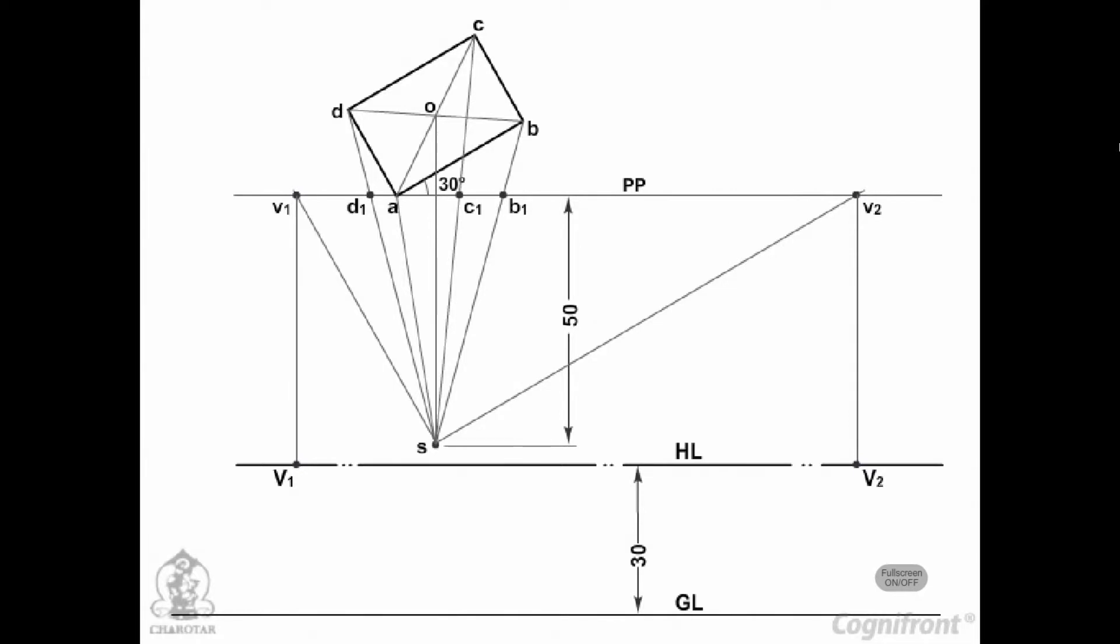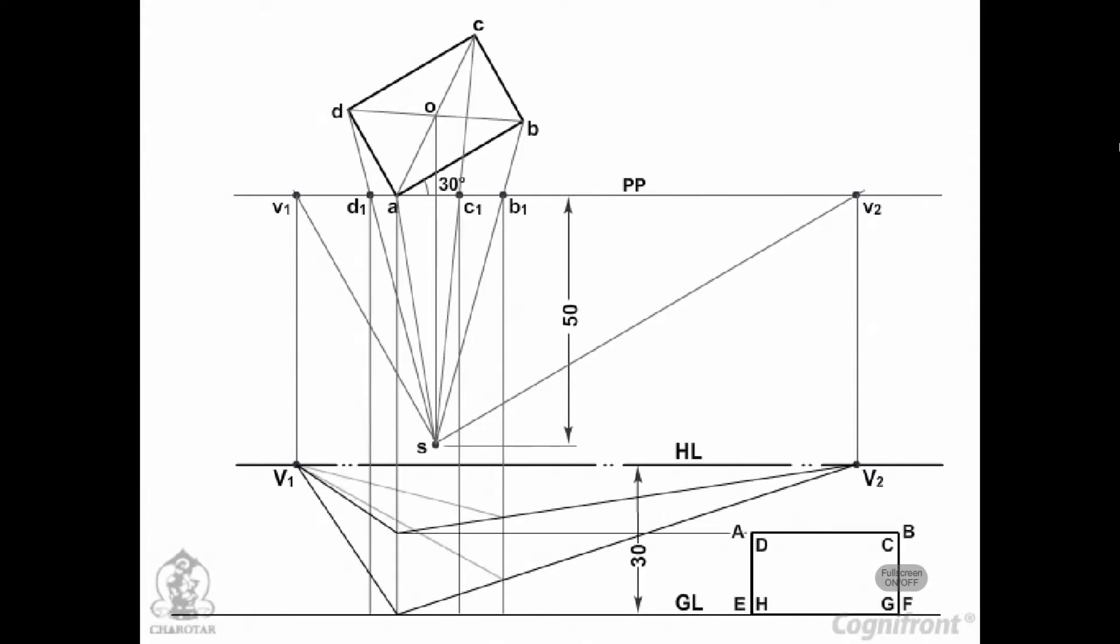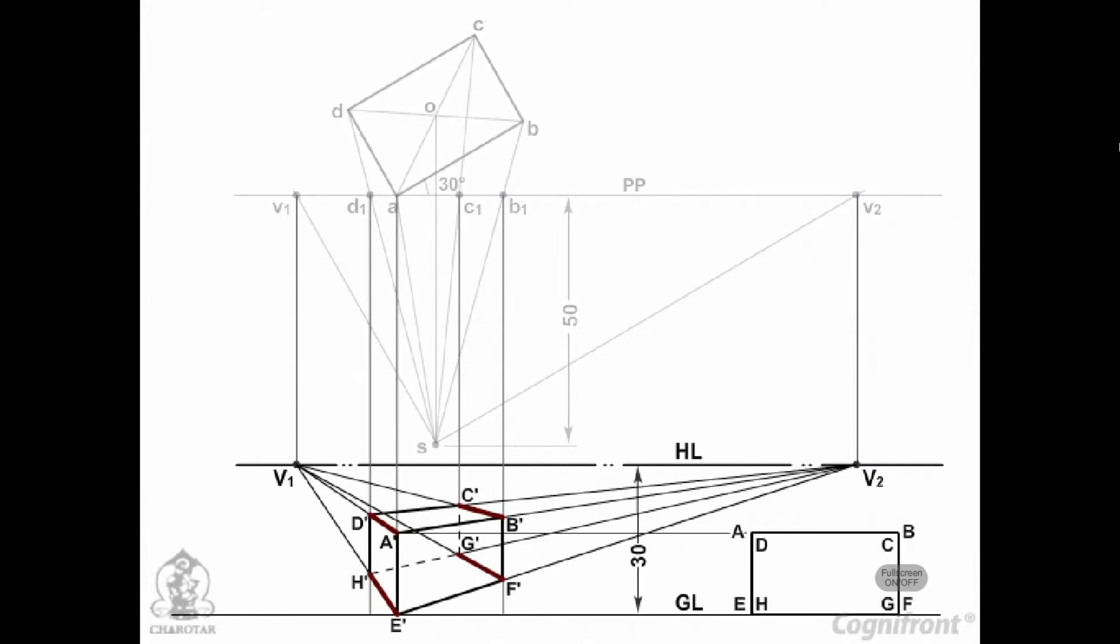V1 and V2 are the vanishing points. Perspectives of edges AD, EH, BC, and FG will converge to V1, and those of edges AB, CD, EF, and GH will converge to V2.